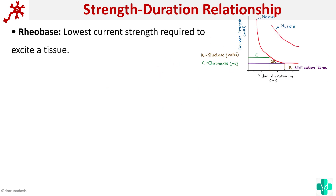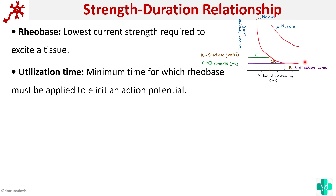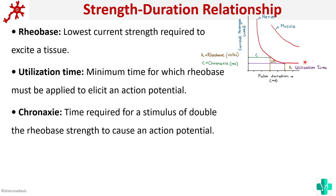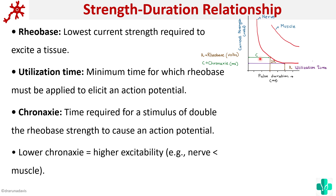To recap: reobase is the lowest current strength required to excite a tissue. Utilization time is the minimum time for which reobase must be applied to elicit an action potential. Chronaxi is the time required for a stimulus of double the reobase strength to cause an action potential. If the chronaxi is low, it means less time is required, which means the tissue is highly excitable. So lower the chronaxi, higher the excitability.